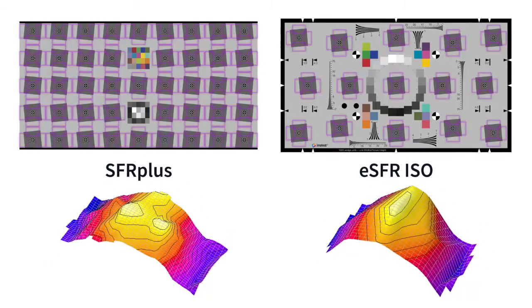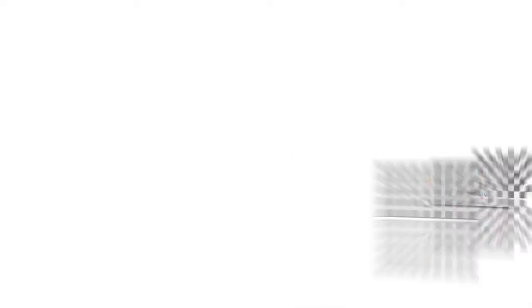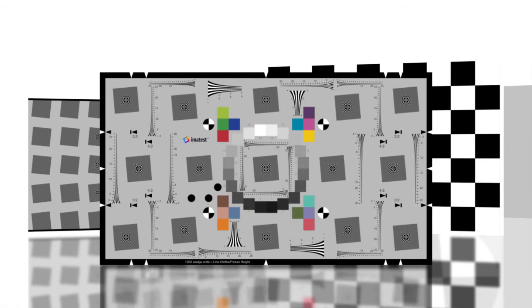IMATEST offers four modules that automatically detect and analyze slanted edges: SFR+, ESFR-ISO, Checkerboard, and SFR-REG.